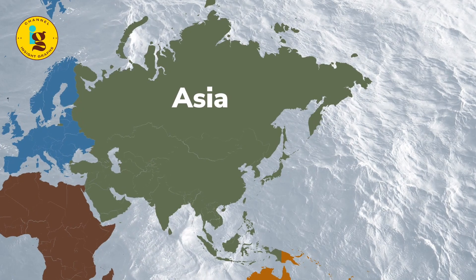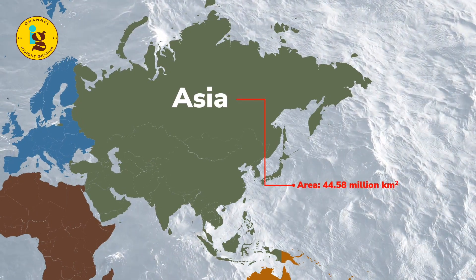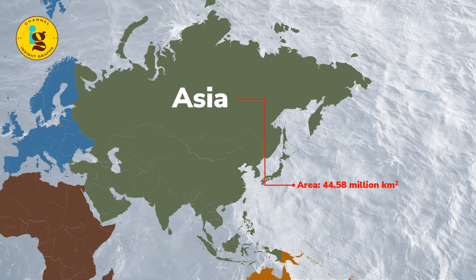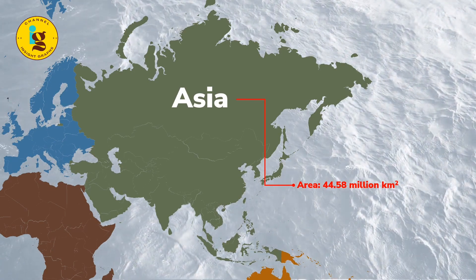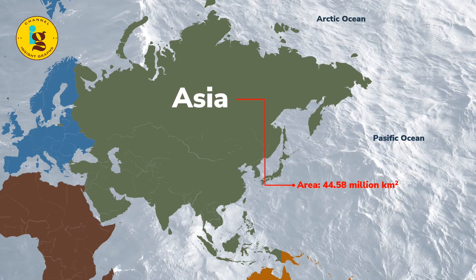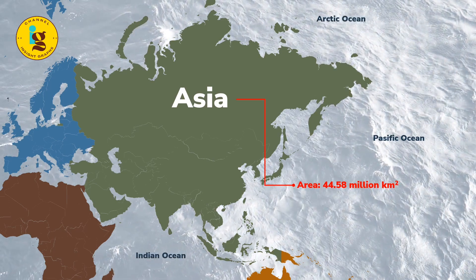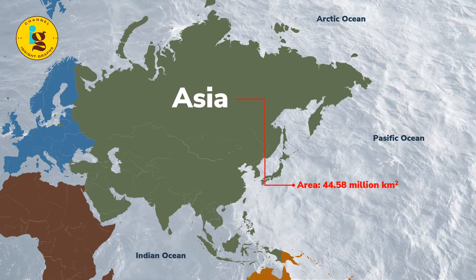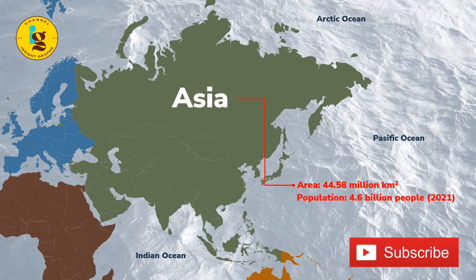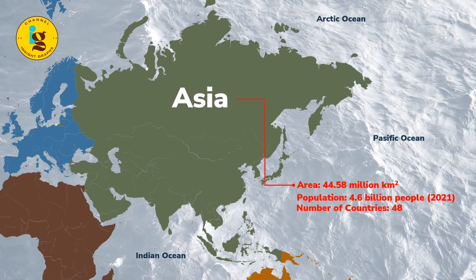Asia is the largest continent on earth, covering approximately 44.58 million square kilometers. It is located primarily in the eastern hemisphere and is bordered by the Pacific Ocean to the east, the Arctic Ocean to the north, and the Indian Ocean to the south. It is also the most populous continent with a population of over 4.6 billion people. Asia is home to 48 countries.